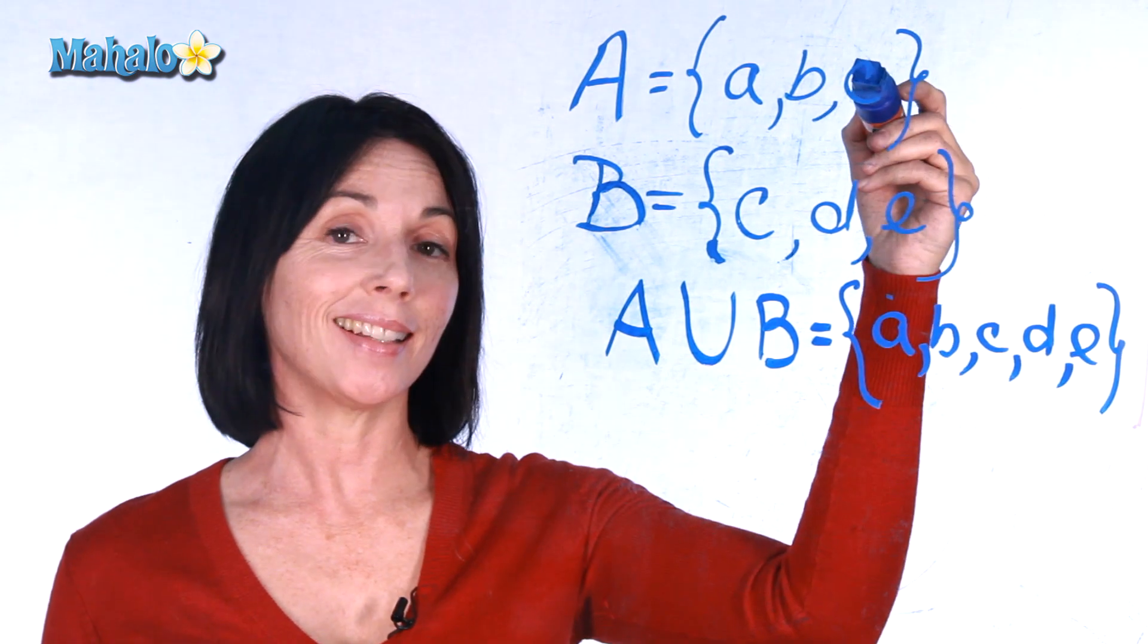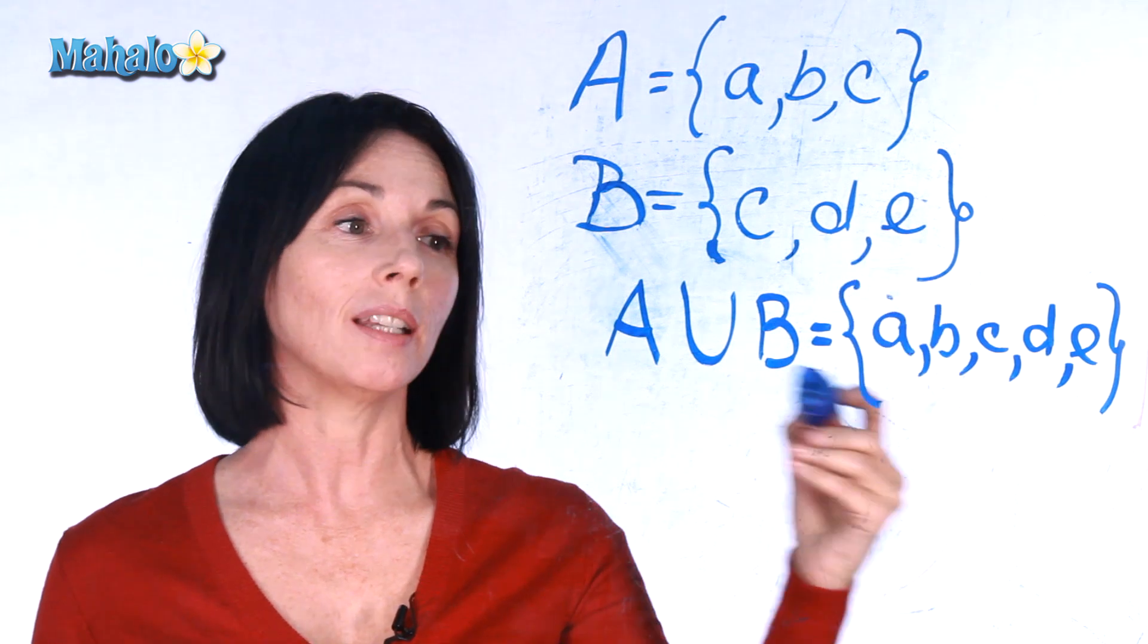So everything that's in A and everything that's in B is in the union of A and B.